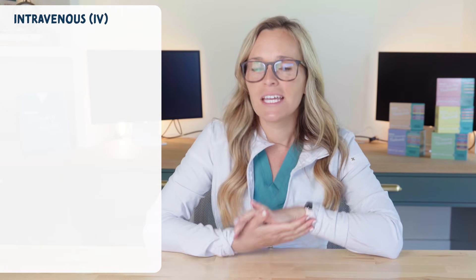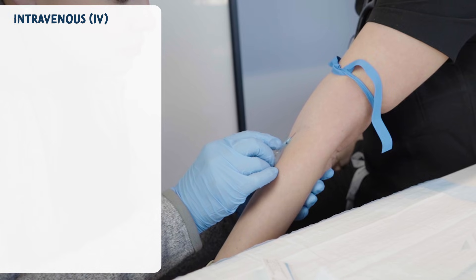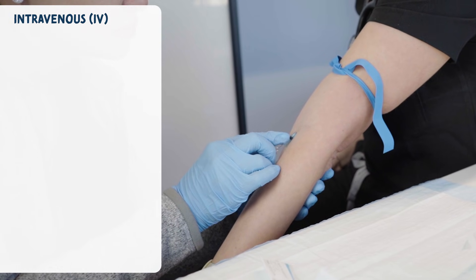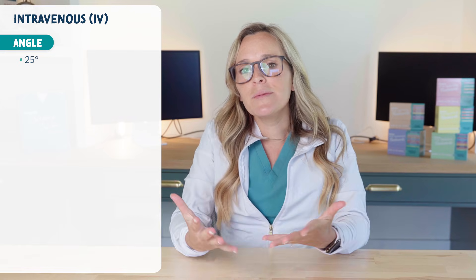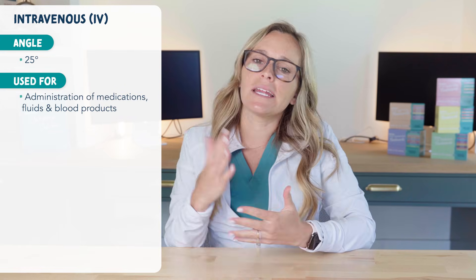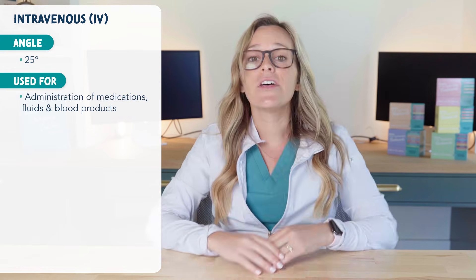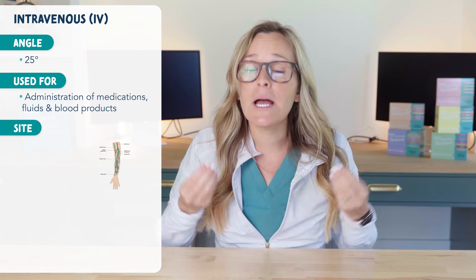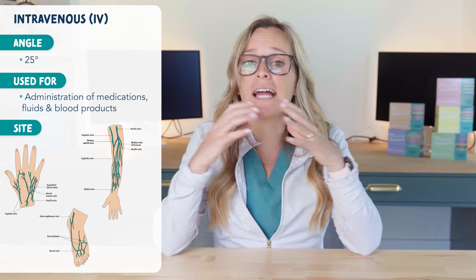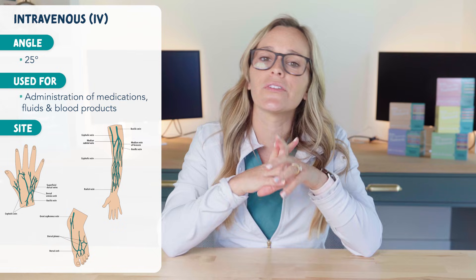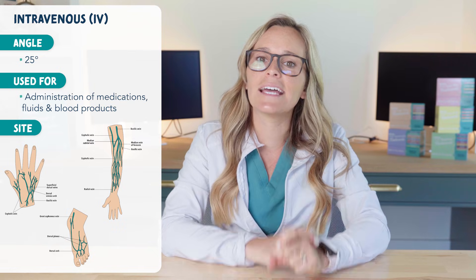Next we have the intravenous route. This is when a catheter is inserted into a vein. It's initially given at a 25 degree angle. It's commonly used for administration of medications, fluids, and blood products. There are many sites where you can insert an IV, but here are some common sites seen on the arm, hand, and foot.